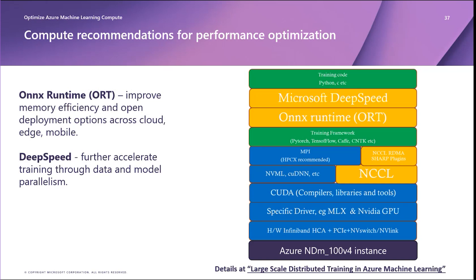DeepSpeed is another open source library developed by Microsoft that reduces GPU memory requirements and the time needed for training large models up to trillions of parameters on distributed GPU clusters. DeepSpeed enables model and pipeline parallelism by using a zero redundancy optimizer to partition model states across GPUs to significantly reduce GPU memory usage.